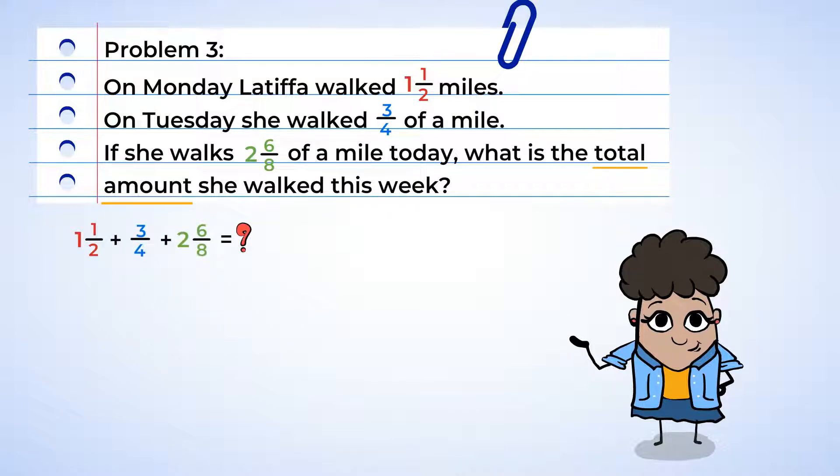Well, let's start by looking at the denominators. We have 2, 4, and 8. Now, 2 and 4 are factors of 8, so our least common denominator will be 8.